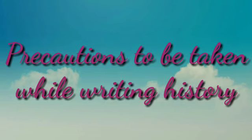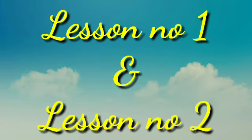The sixth and last point: precautions to be taken while writing history. It is necessary to take precautions while using these sources. These precautions are: first, critical examination of written documents; and second, cross-checking of conclusions from various sources. In this way, we have revised lesson number 1 and lesson number 2. In the next video, we are going to learn the next lesson.